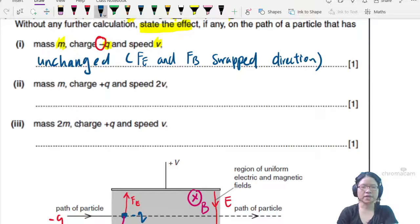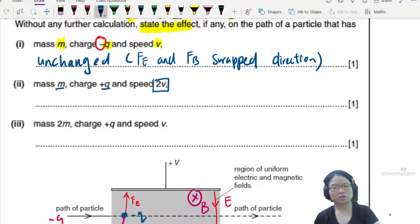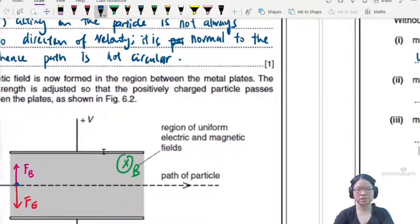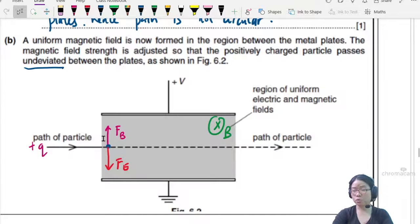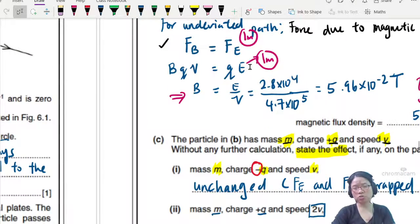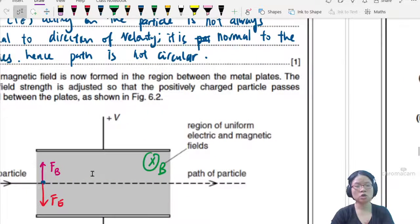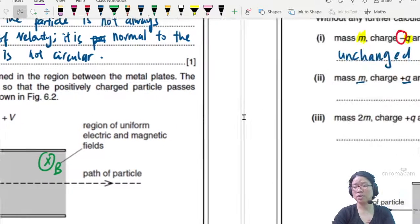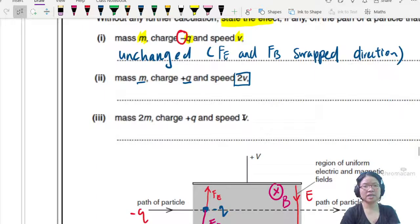Second one: mass is the same, charge is the same, speed is doubled. When you are traveling faster, which force will be bigger? Fe, the electric force, does not depend on how fast the particle is moving. You move very fast, your Fe is still the same, as evident from this equation here. So the only thing that would change is when V is bigger, your magnetic force becomes stronger. If magnetic force becomes stronger, it will turn towards the positive plate. So we will say this one as deviated upwards.